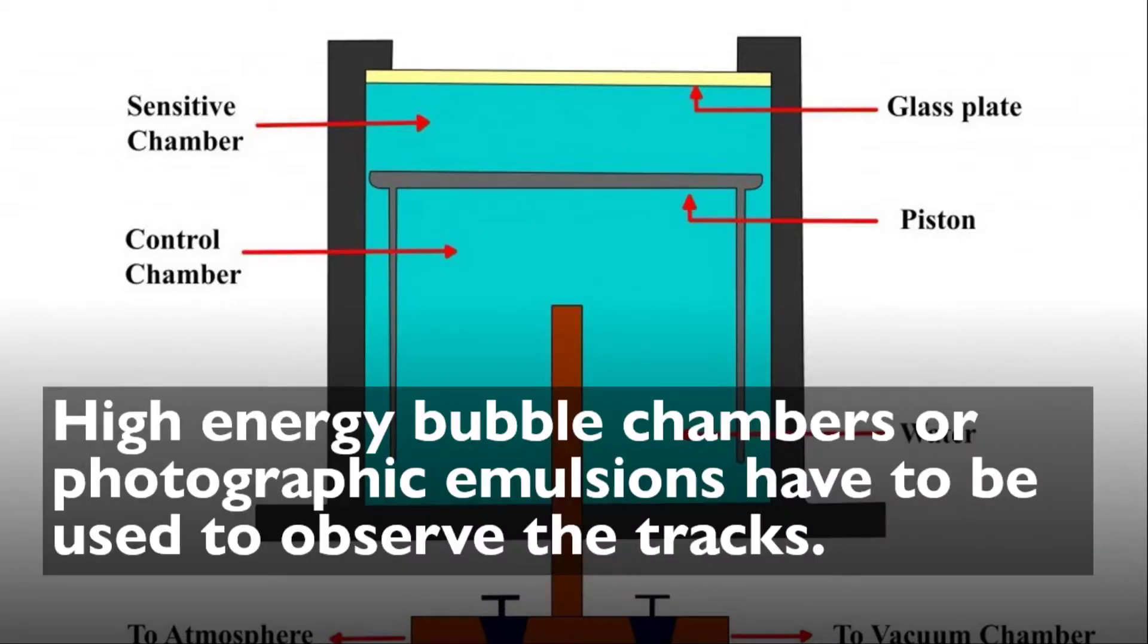High energy bubble chambers or photographic emulsions have to be used to observe the track, as this is not available in the cloud chamber. We are not easily ready to observe the track.